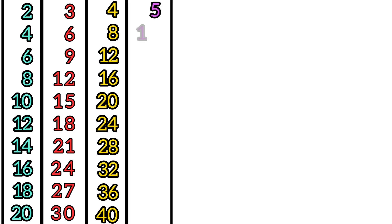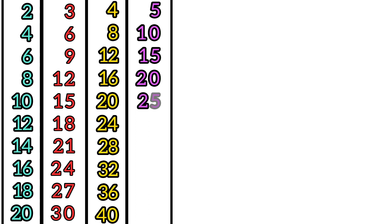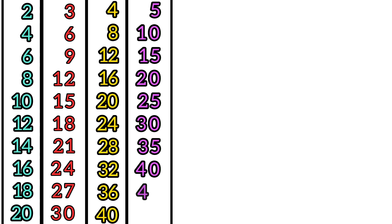5 times tables. 5 times 1 is 5. 5 times 2 is 10. 5 times 3 is 15. 5 times 4 is 20. 5 times 5 is 25. 5 times 6 is 30. 5 times 7 is 35. 5 times 8 is 40. 5 times 9 is 45. 5 times 10 is 50.